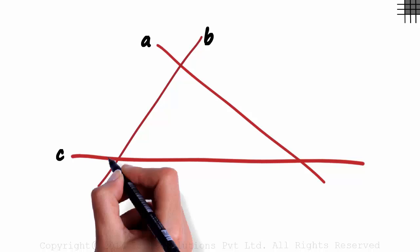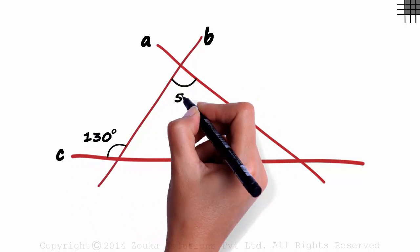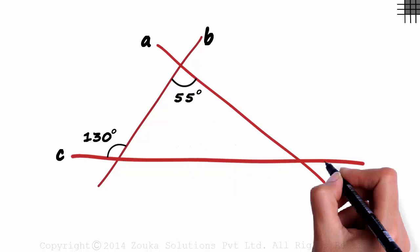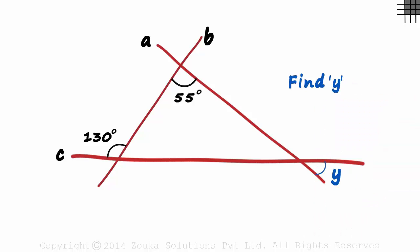You're given that this angle is 130 degrees, this one's 55 degrees, and this one's Y. How do we find the value of Y? Pause the video and give it a try.